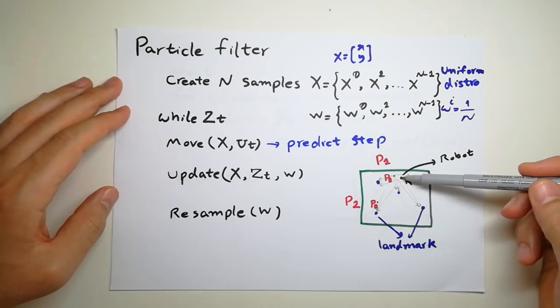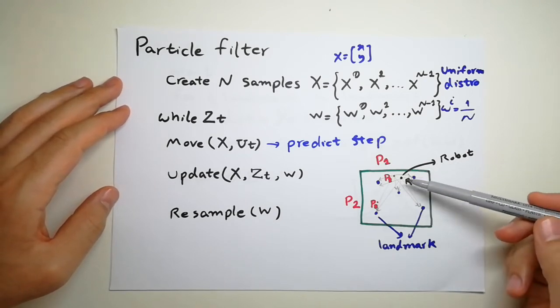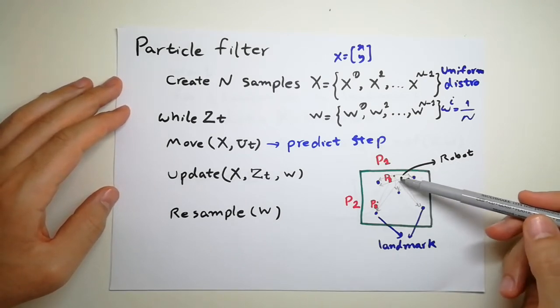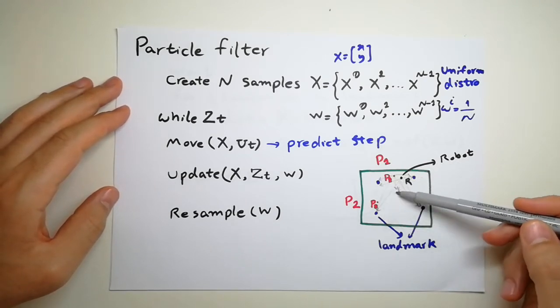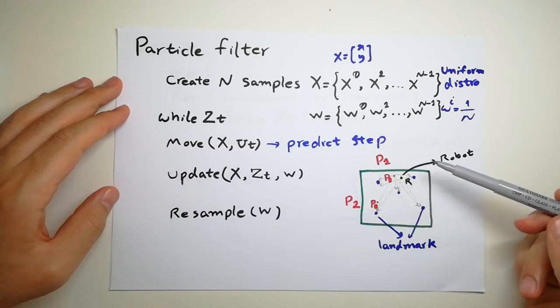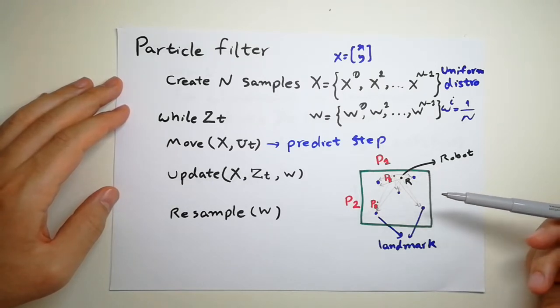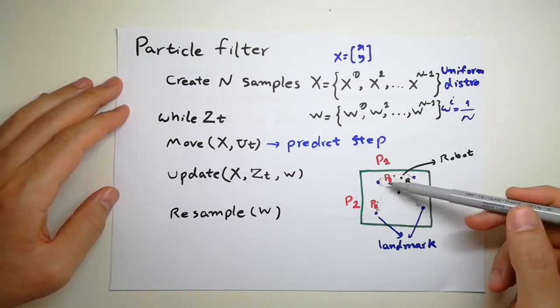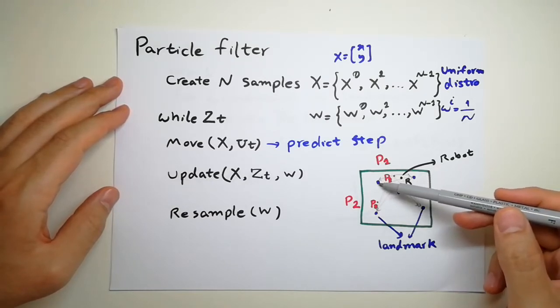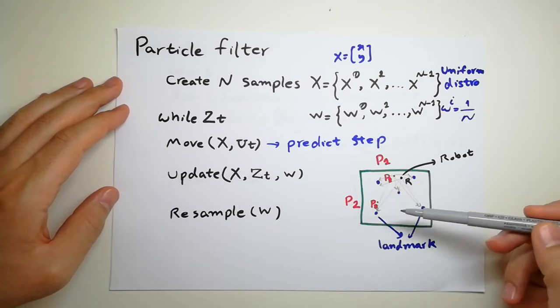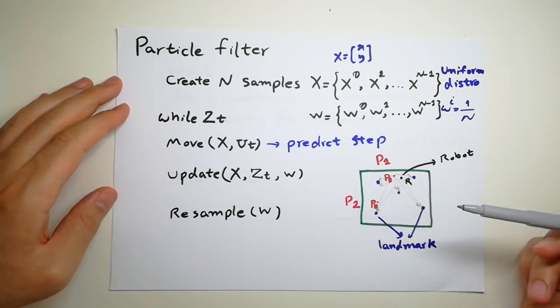Then I will acquire some measurement data. If I move here, I assume that I have a range scanner on top of my robot, so I can find the distance between the robot and each one of the landmarks. As I said, I can uniquely identify them, so I exactly know which one is landmark number one, which one is number two, three, and four.